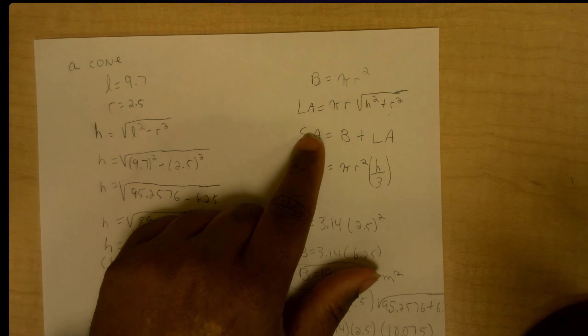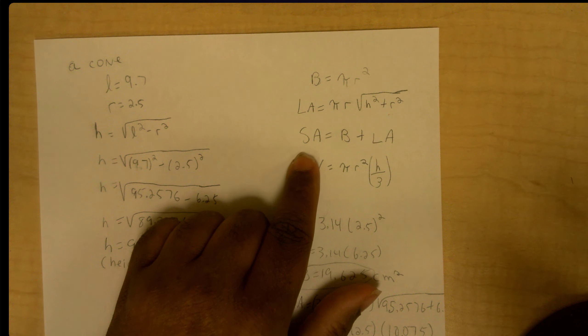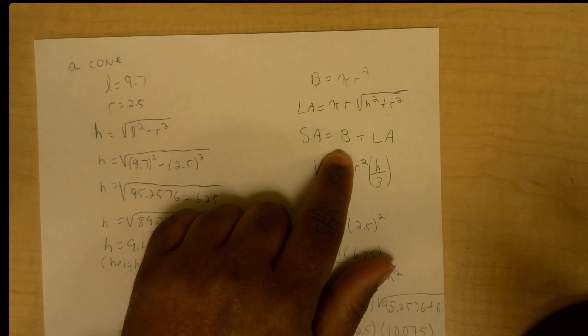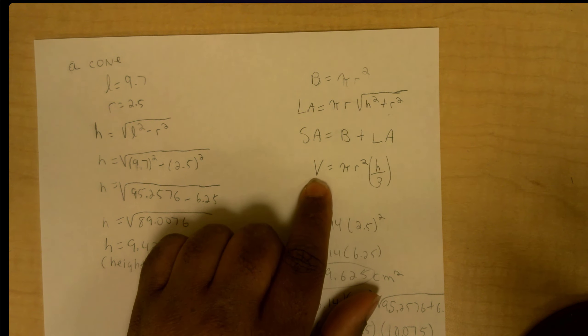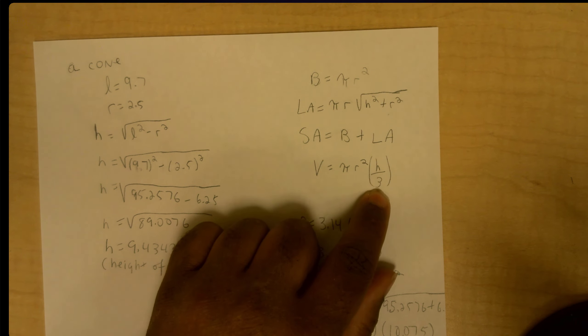That lateral area around the cone is used by this formula here, and then I have my surface area which is the base plus the lateral area, and then I have my formula for the volume which is Pi r squared h divided by 3.